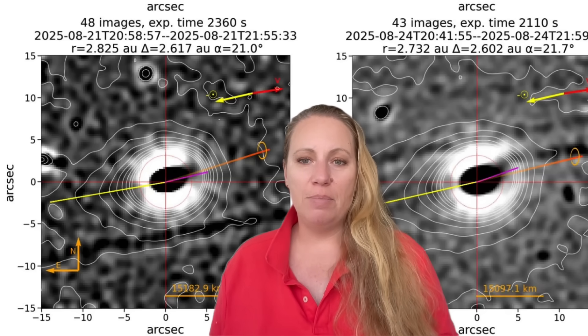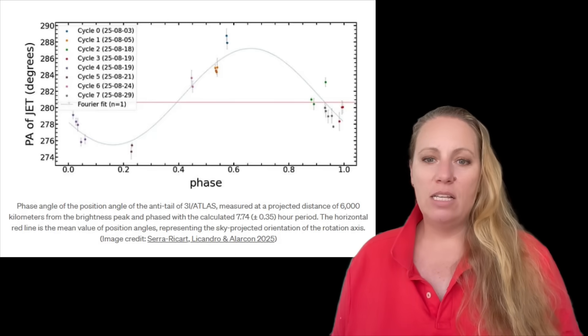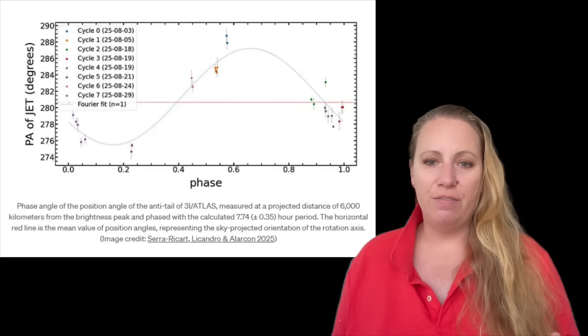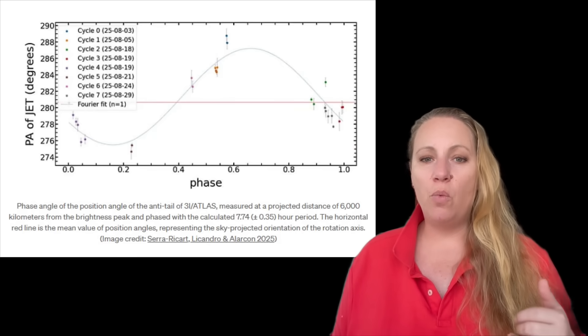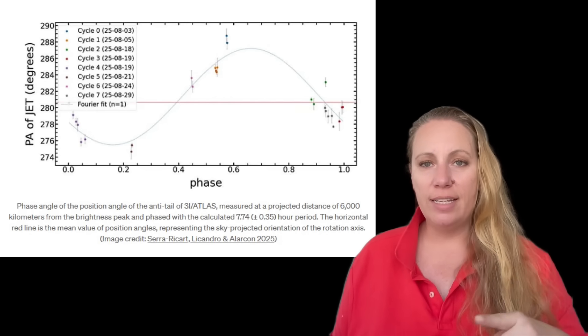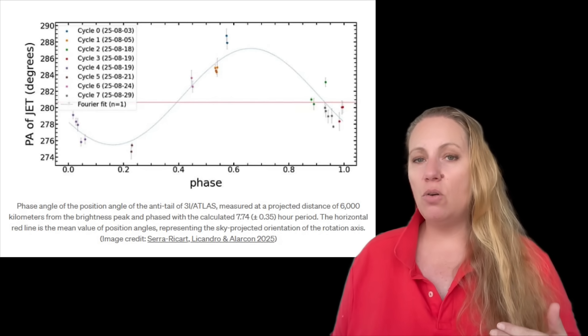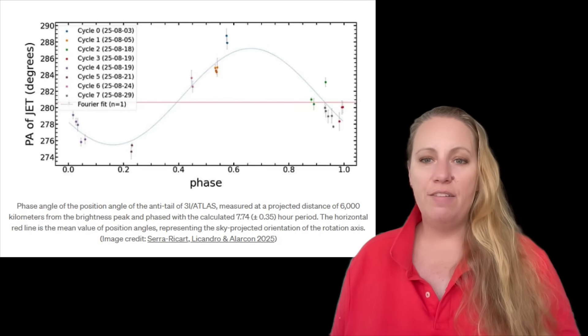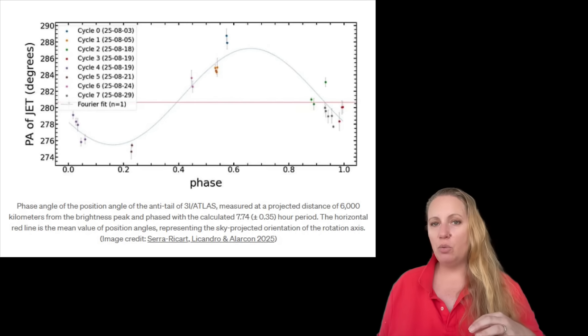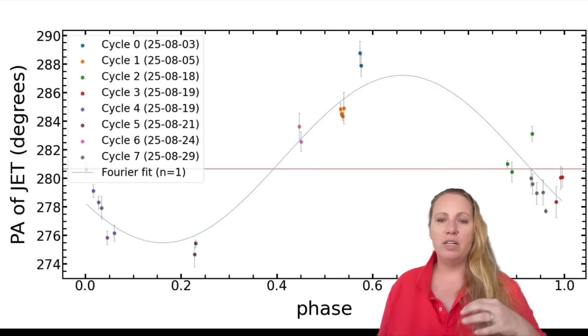So what does the x-axis mean? Phase. So look at the bottom axis, it says phase. Phase means where we are in one full rotation cycle. Phase 0, start of the rotation. Phase 1, one full rotation later. And everything between zero and one is just different moments during one spin.